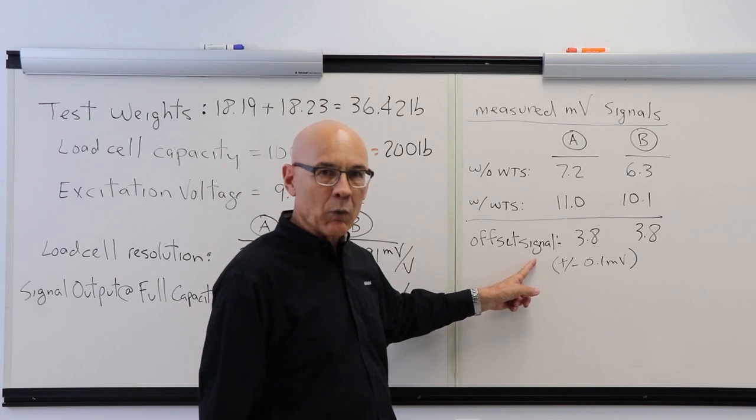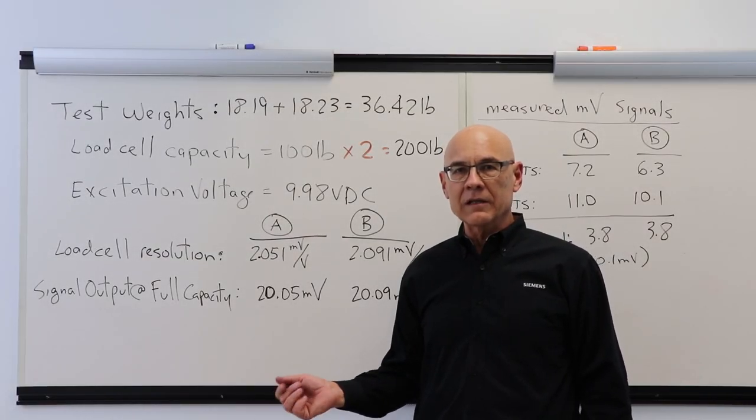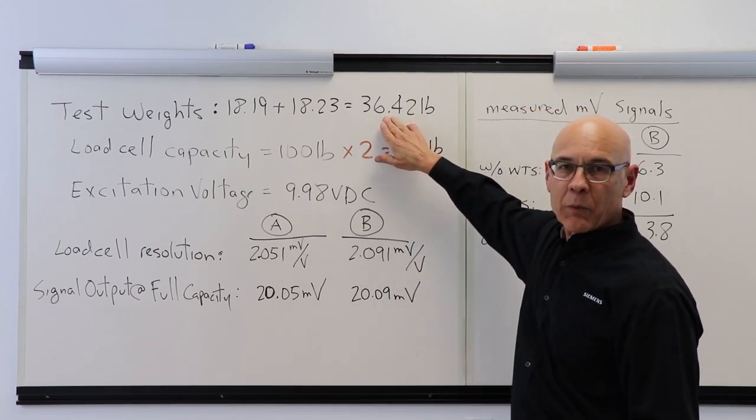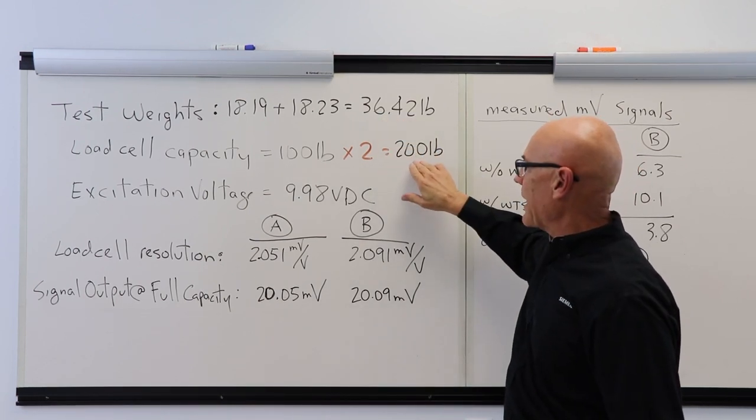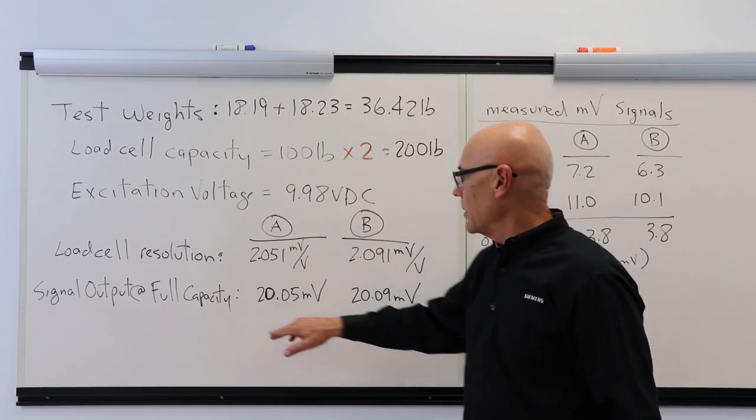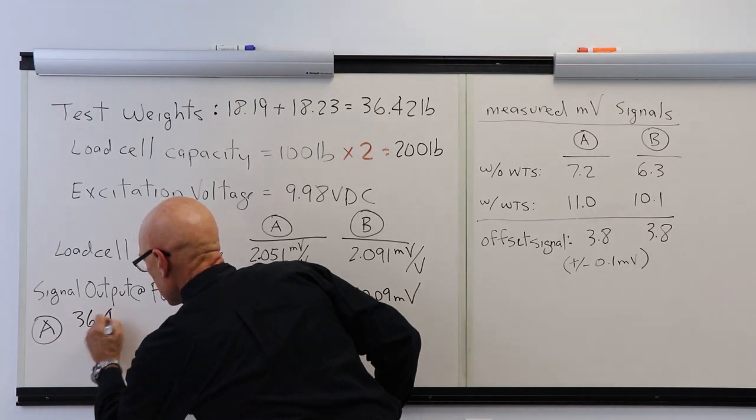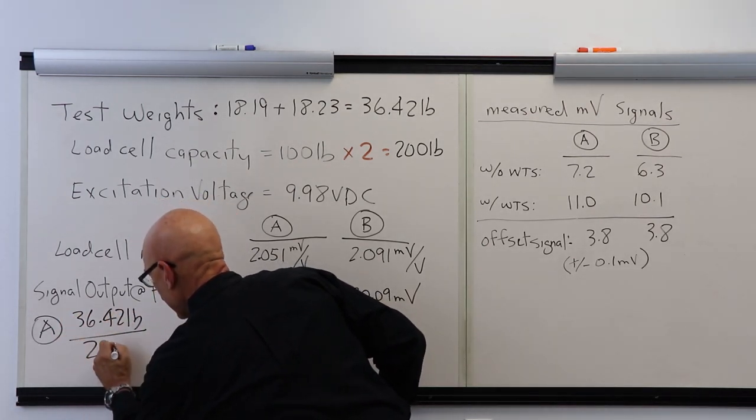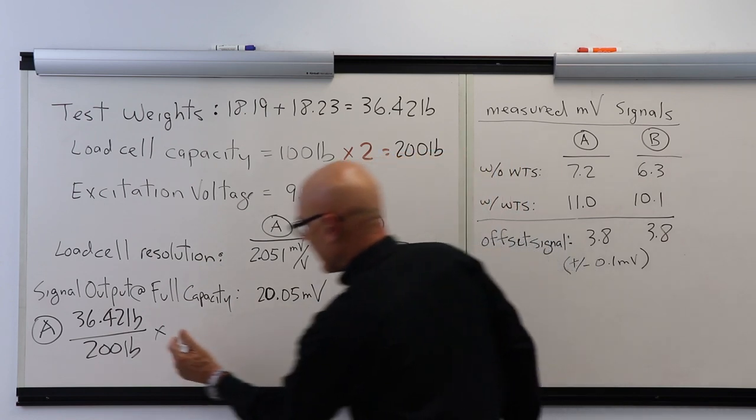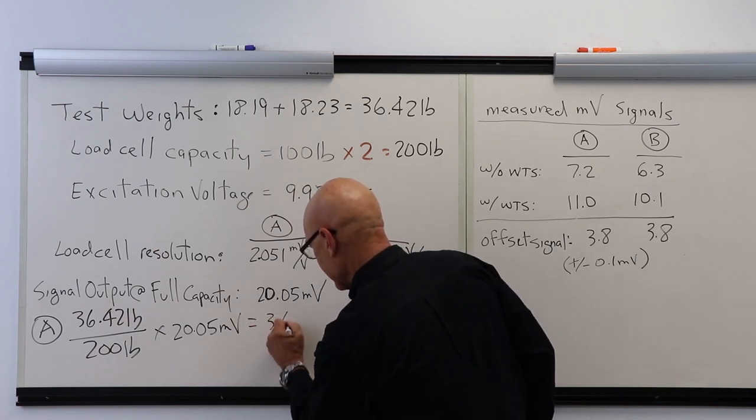Since the resolution of my digital multimeter is 0.1 millivolts, I'm going to say that this offset signal can have a tolerance of plus or minus 0.1 millivolt. Now we're going to calculate the millivolt signal output from each load cell using the actual weight that we used in the demonstration divided by the total capacity of the weigh bridge, and then multiply that by the signal output at full capacity. So I'm going to take 36.42 pounds for load cell A, divide that by 200 pound capacity for the weigh bridge, and multiply that by 20.05 millivolts. That's going to be 3.65 millivolts of signal offset based on our test weights.